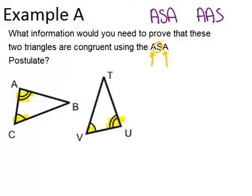So we would need to show that AC, which is the side in between angle A and angle C, is congruent to VU, which is the side in between angles V and U. So we would need to show that AC is congruent to VU.